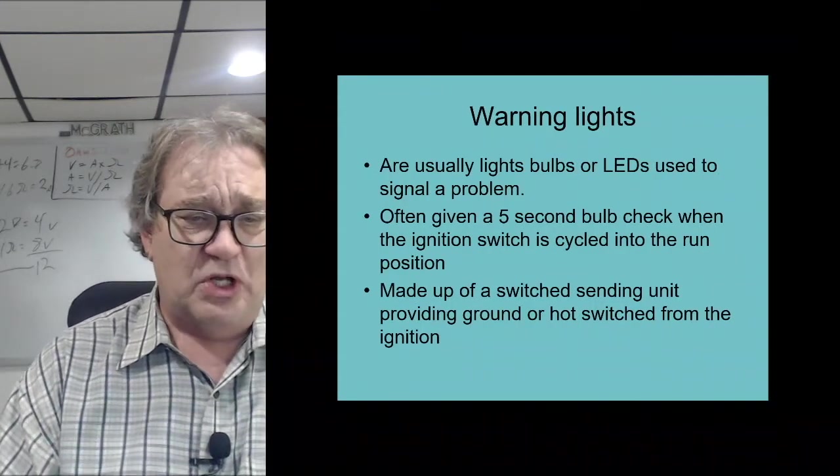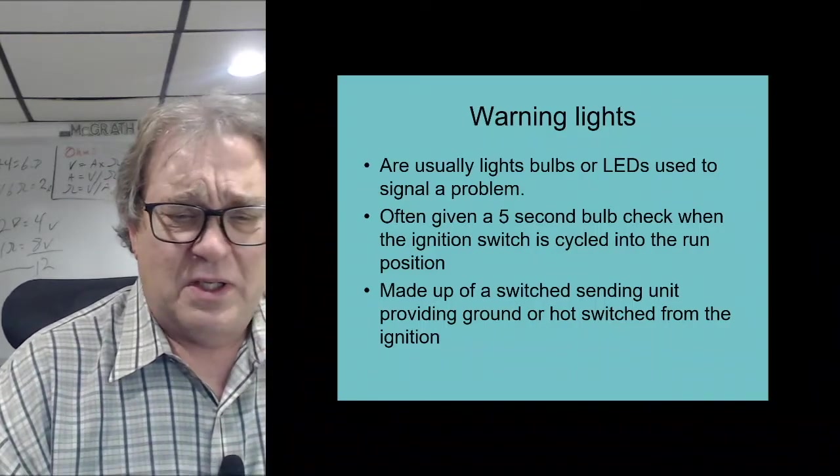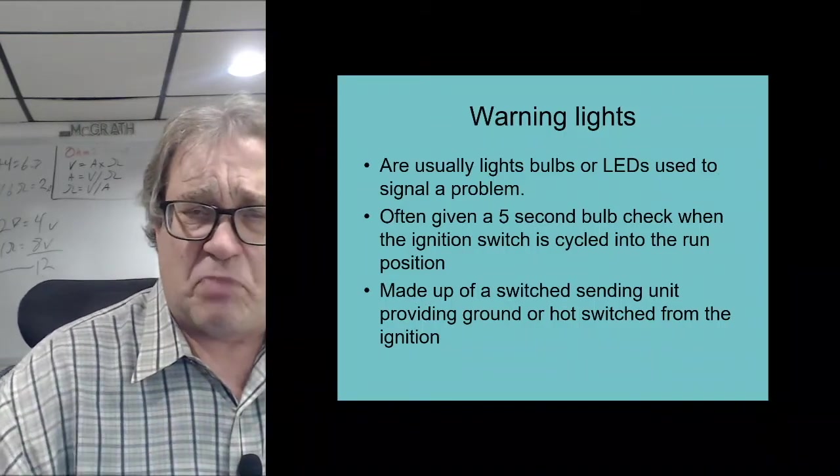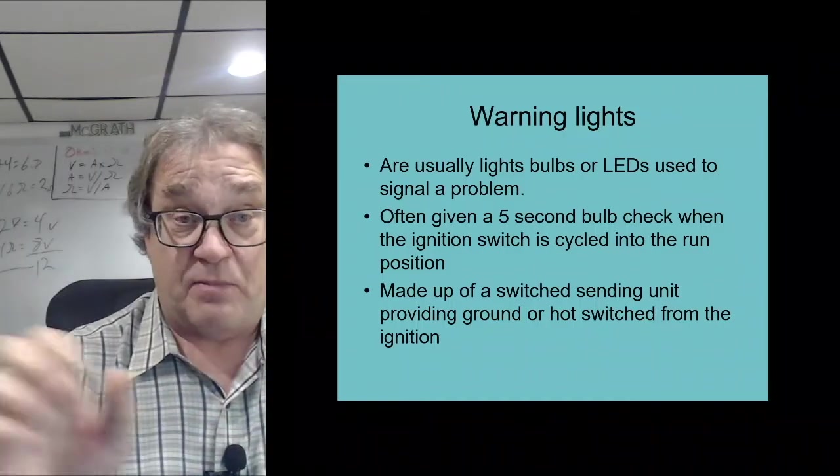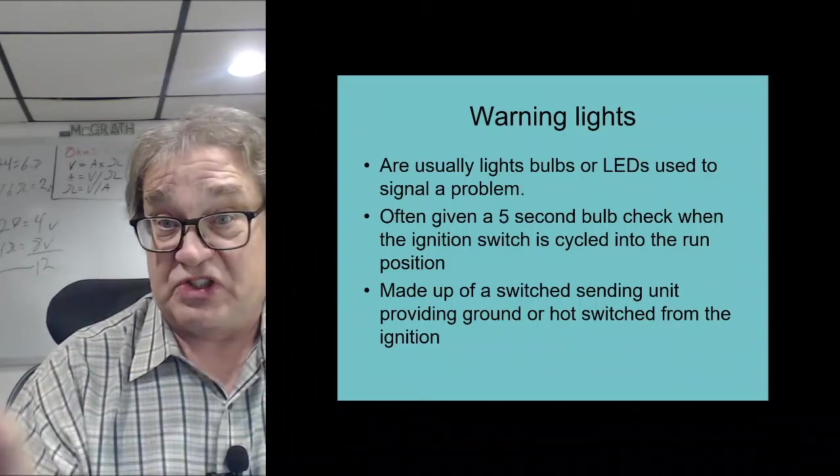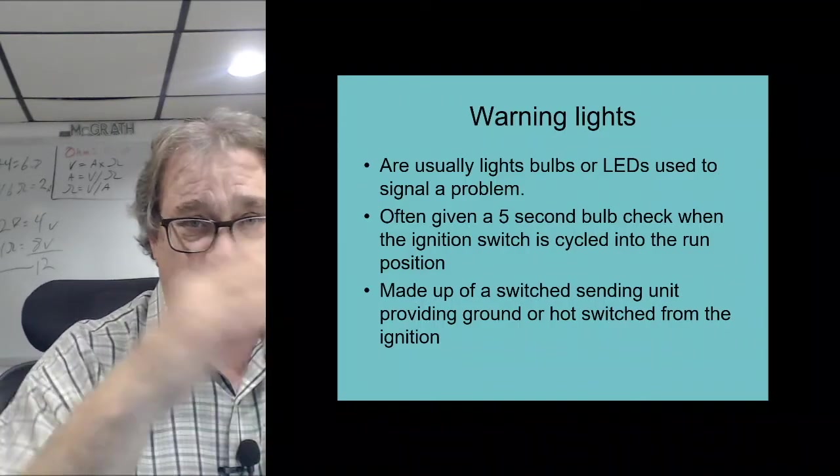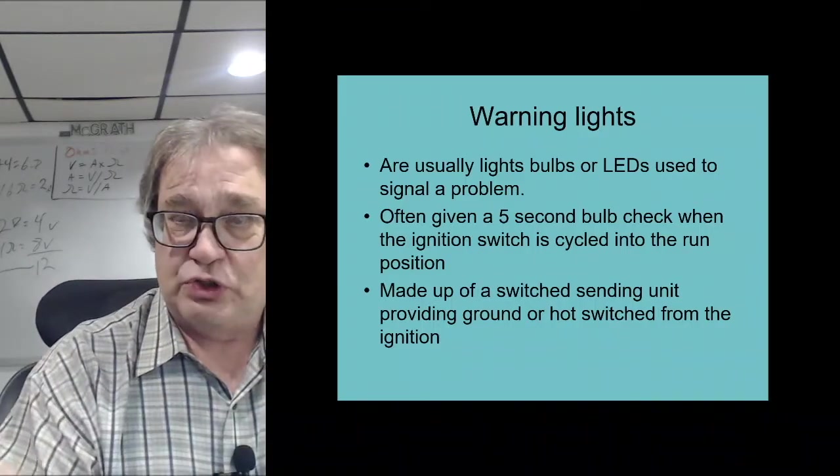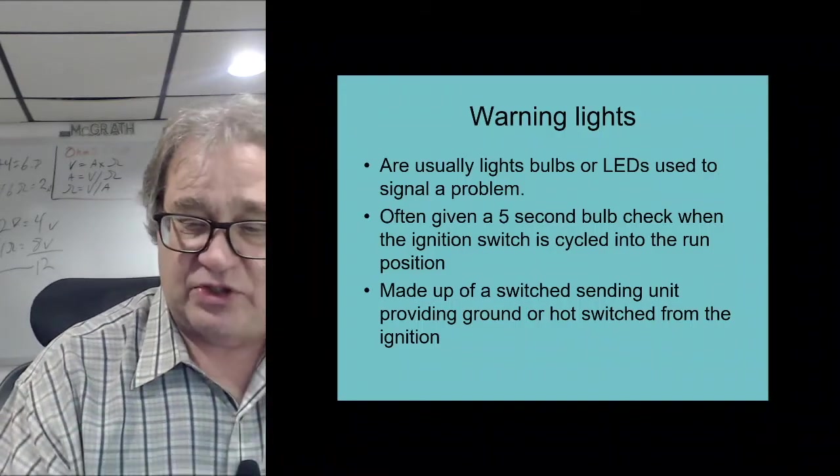The warning lights - usually those are light bulbs or LEDs that signal a problem. Oftentimes when you first turn on the key it goes through a bulb check where all the warning lights light up on the dashboard so you can see that the bulbs are still good. A lot of times on a lot of cars they'll sweep the gauges once to prove out and let you know that all these things are working.